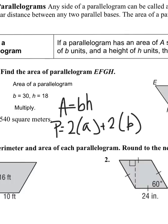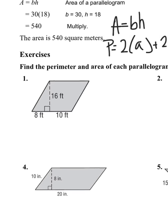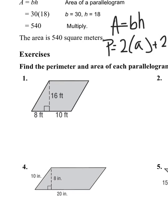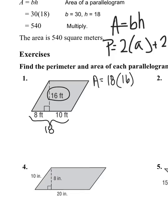Starting with question number one — the height is inside the parallelogram, so I know my height is 16. The base is the two pieces added together: 8 plus 10 equals 18. For area, area equals base times height, so area equals 18 times 16. That gives area equals 288 feet squared.